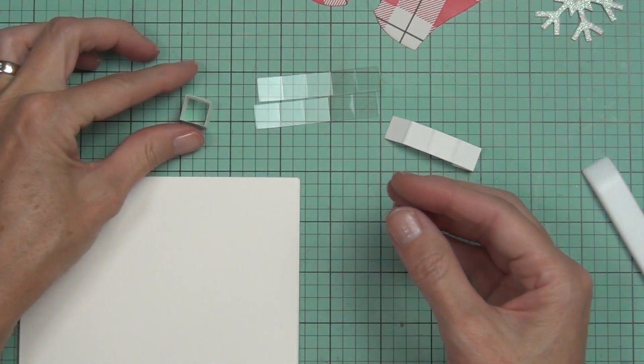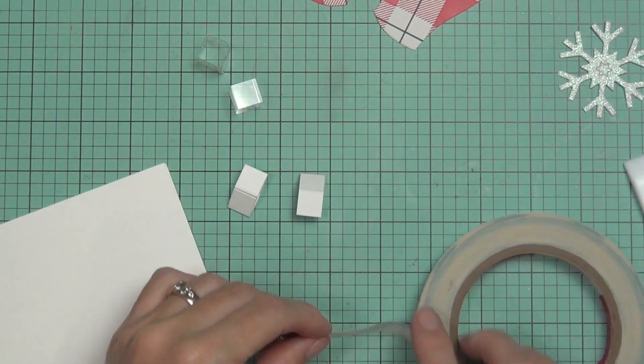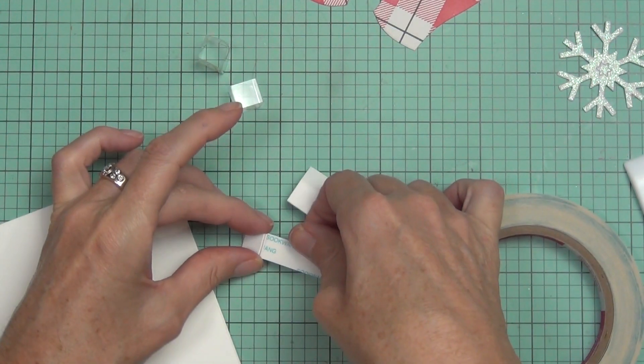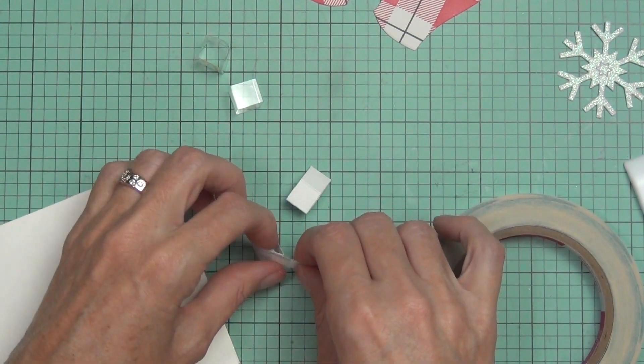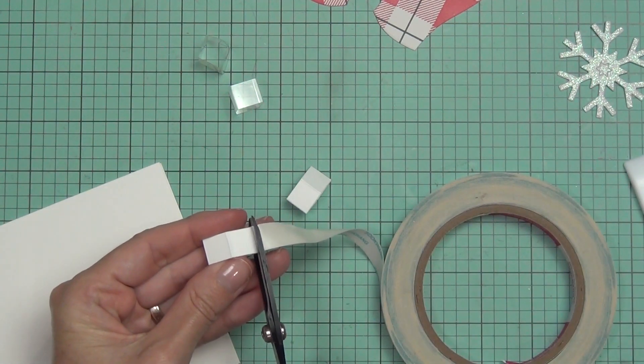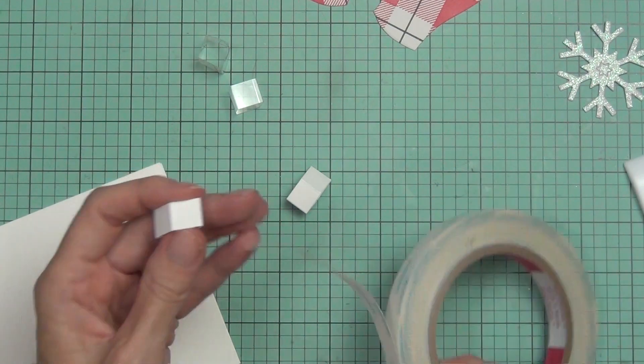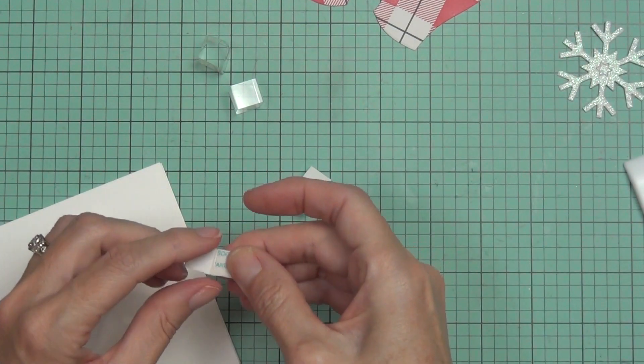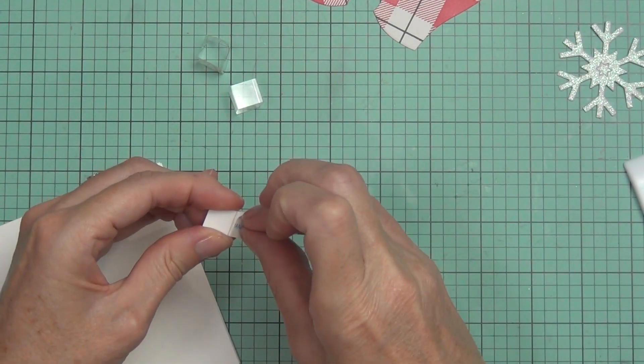And I'm going to join all four of them together by putting some Be Creative tape—so this is a really nice strong tape—on one side of the rectangle strips. And then once I've made the four squares, I'll add another piece of the Be Creative tape to join each of the two squares together.